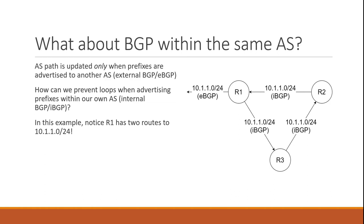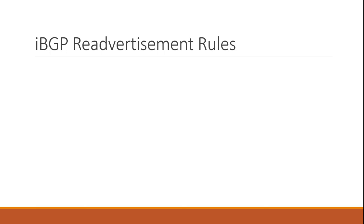In this diagram, R1 has two routes to 10.1.1.0/24 — one via its external neighbor and one via its internal neighbor. When the external prefix goes down, we end up with the looping scenario, with traffic silently circulating between R1, R2, and R3 until it's dropped. BGP by default has a re-advertisement rule for prefixes learned from IBGP neighbors: do not re-advertise an IBGP-learned network to another IBGP neighbor. This way we can break the loop.